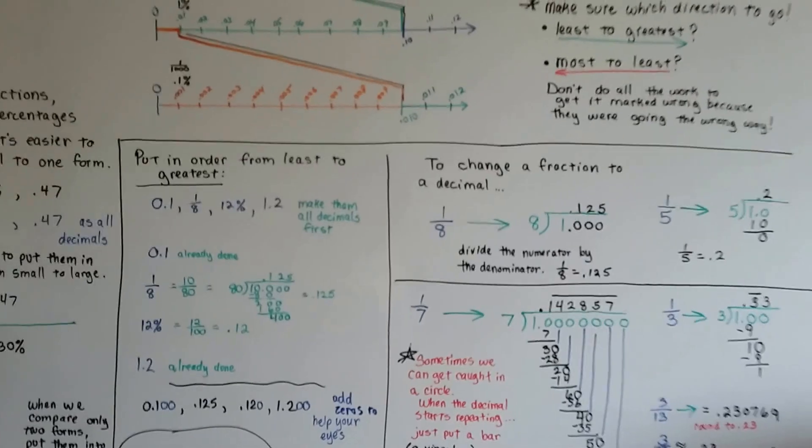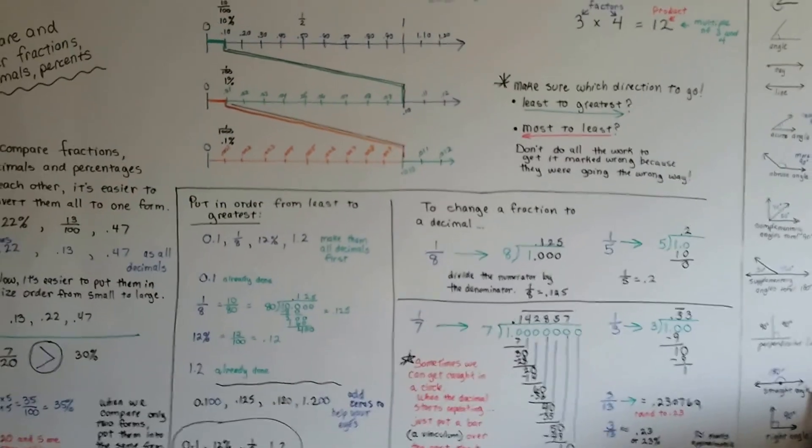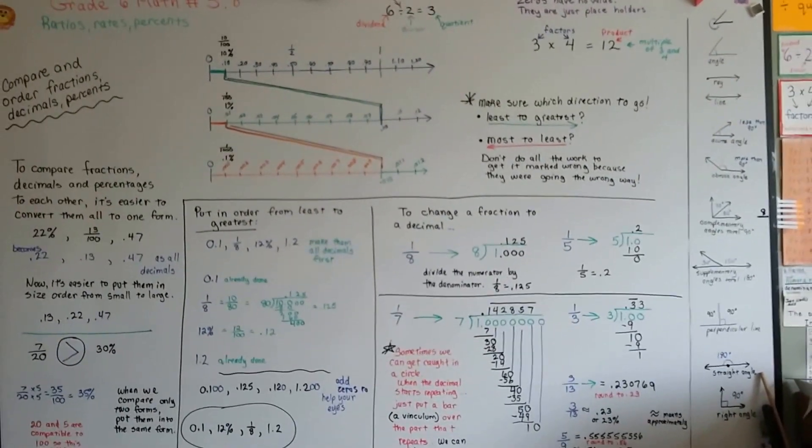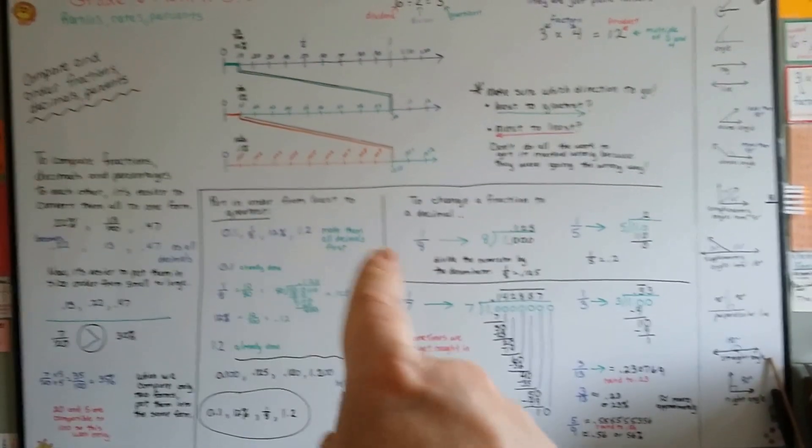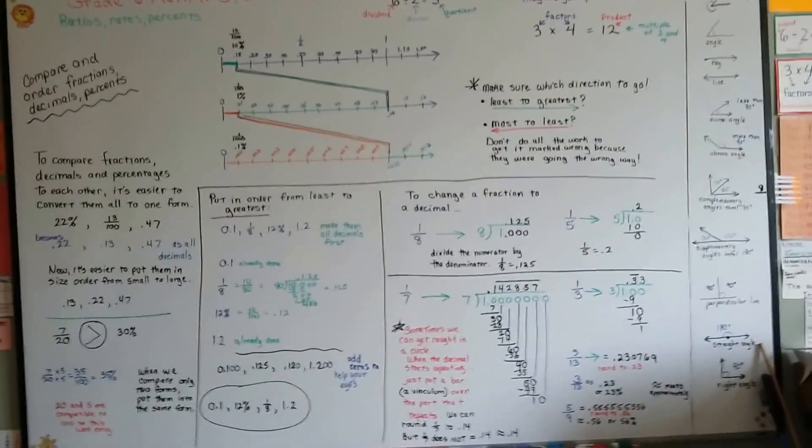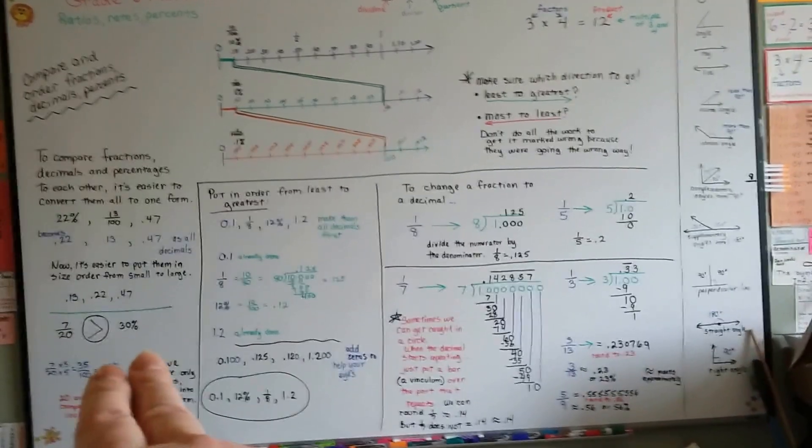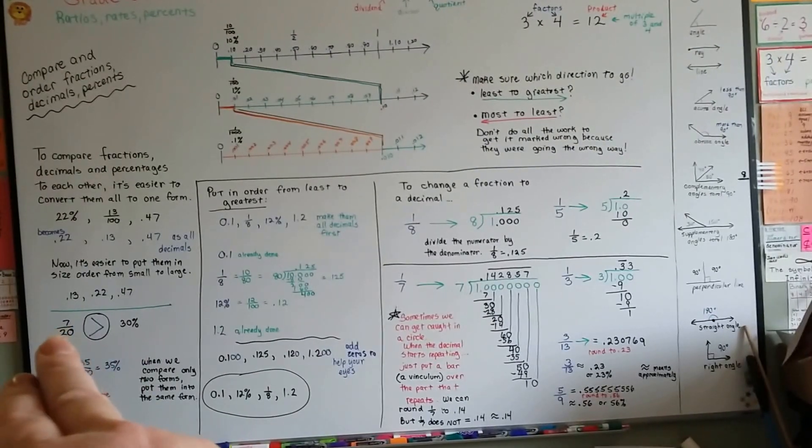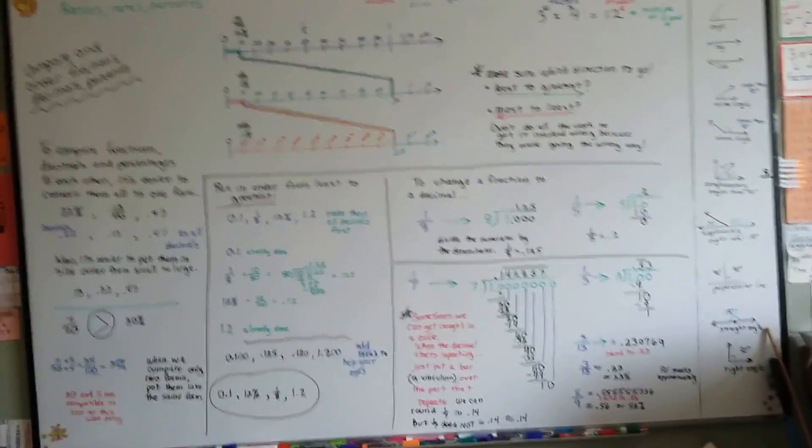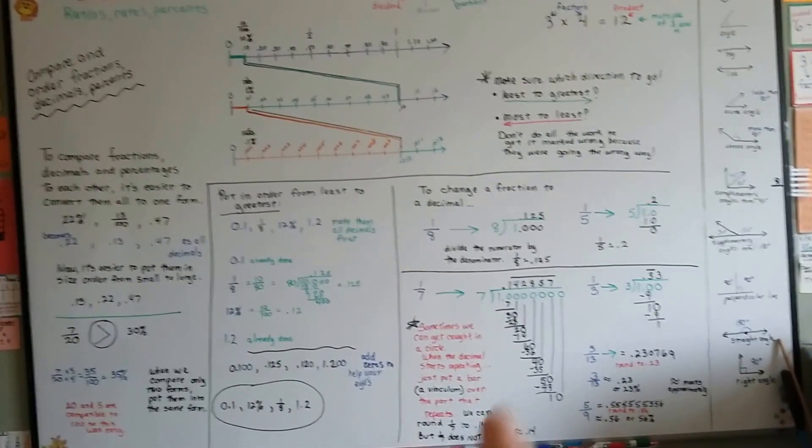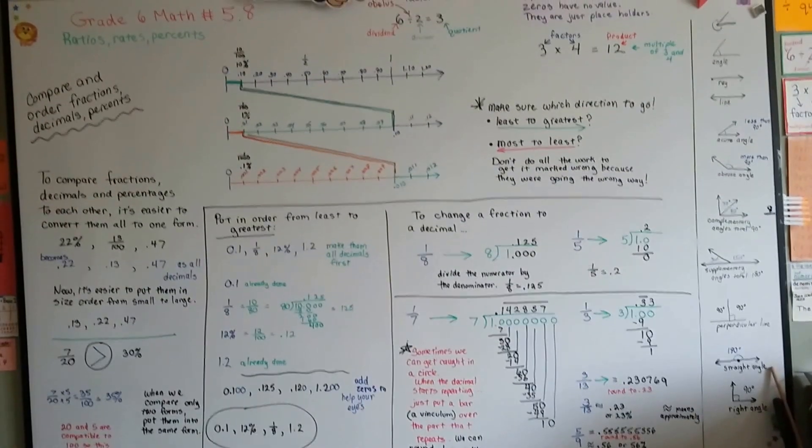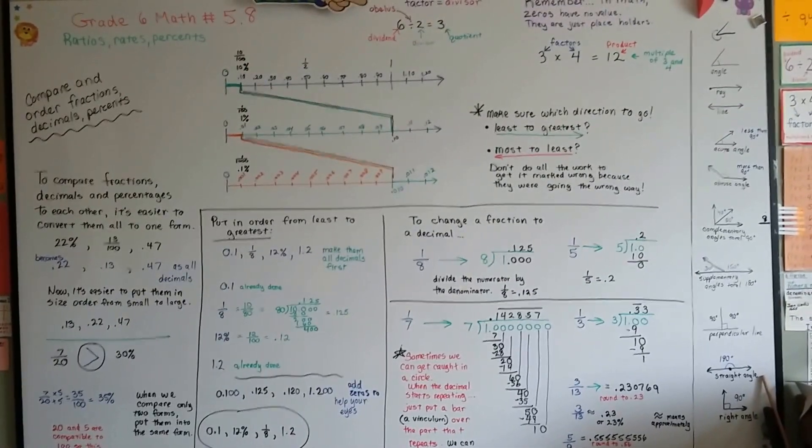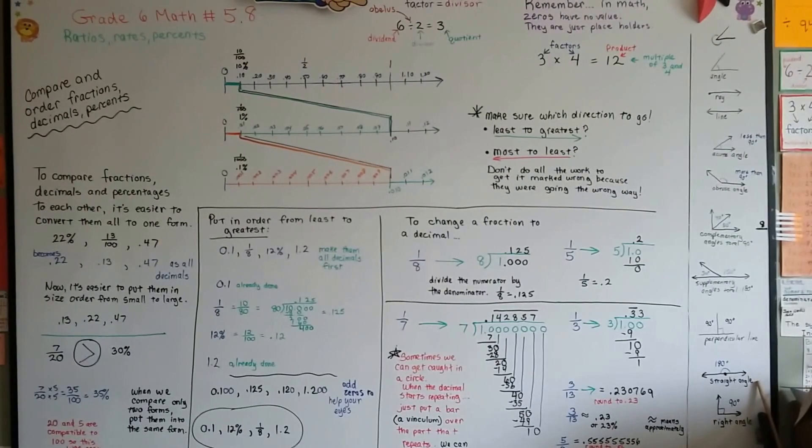So, it's not that difficult to compare and order them. Make yourself a number line, a nice big number line, so that you can try lining them up on the number line. And, remember, if you've got a list of them to convert, put them all into one form. Put them all into decimals. If you've only got two to compare to each other, pick percentages or decimals, because that way you can just turn the fraction into a percentage or a decimal. And, remember, sometimes the fraction will repeat when you try to do the fraction to the decimal change. And, to not worry about it, just put a bar over the part that repeats. See you next video. Bye!